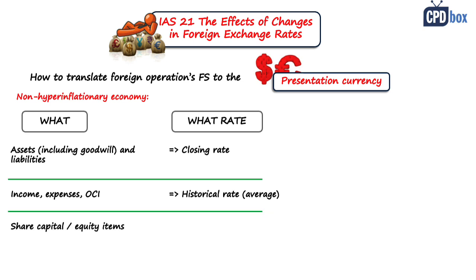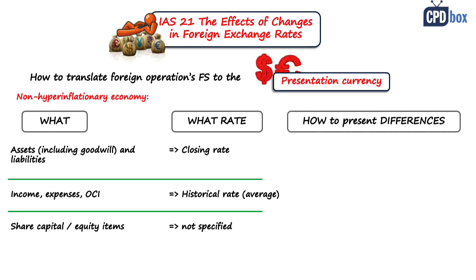Regarding equity items like share capital and share premium, IAS 21 is silent — the rates to use are not specified. The most appropriate approach seems to be using historical rates, though I have seen closing rates used too. It doesn't impact the overall equity balance because all resulting exchange rate differences are presented in equity as a separate component called CTD, or currency translation difference.